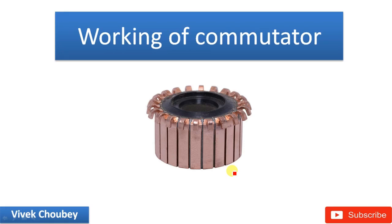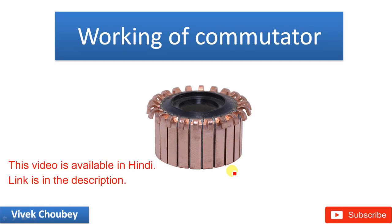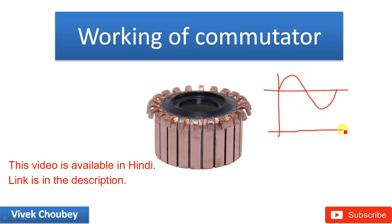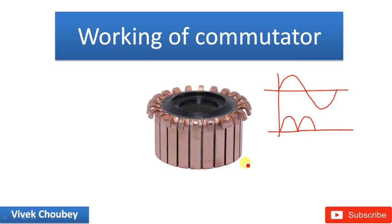Hello guys, Vivek here. Welcome back to my channel. Today in this video I am going to talk about the working of a commutator. A commutator is a device which is basically used in a DC generator. As you know, in a DC generator the internal EMF that is generated is actually alternating in nature. So a commutator converts this alternating current into direct current, because from a DC generator we want a DC waveform to come out. It is a kind of mechanical rectifier. In this video I am going to talk about how this commutator works and how it actually changes this AC generated EMF to DC.